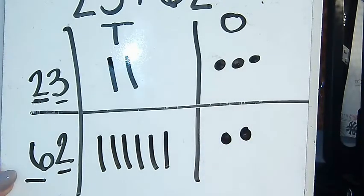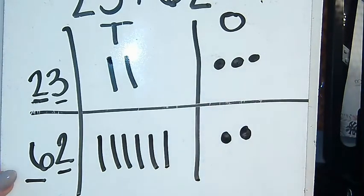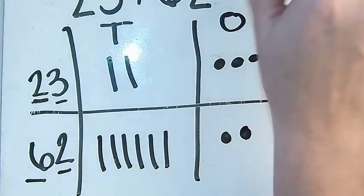Now again, I tell them, start in the 1s place because you might need to bundle. You might need to regroup. So 1, 2, 3, 4, 5, I have five 1s and 1, 2, 3, 4, 5, 6, 7, 8. I have eight 10s. So my answer is 85.